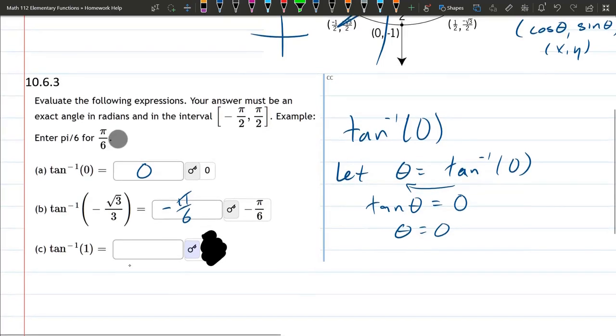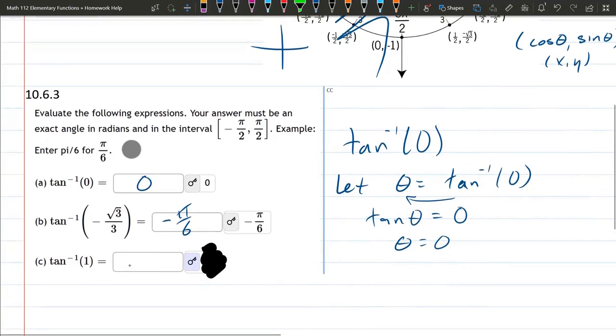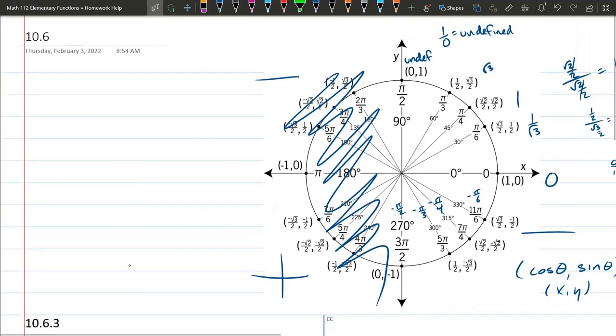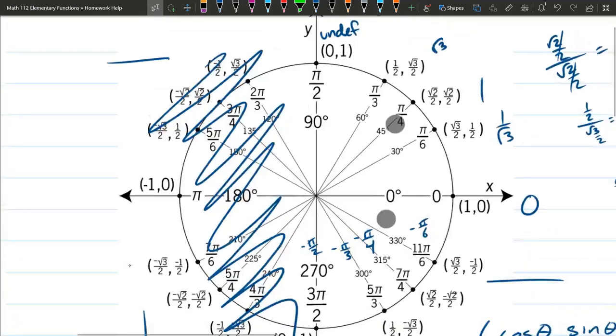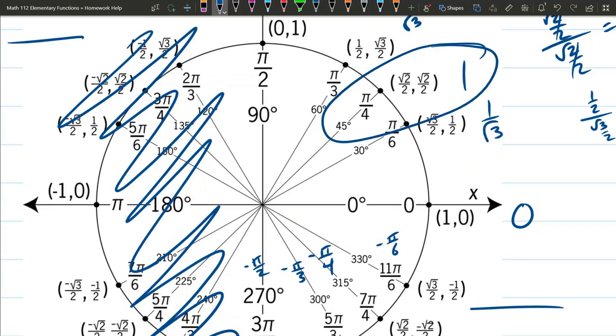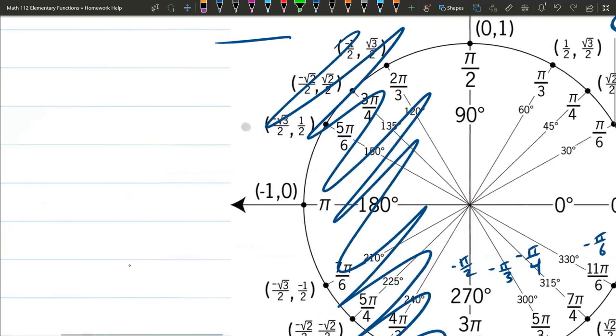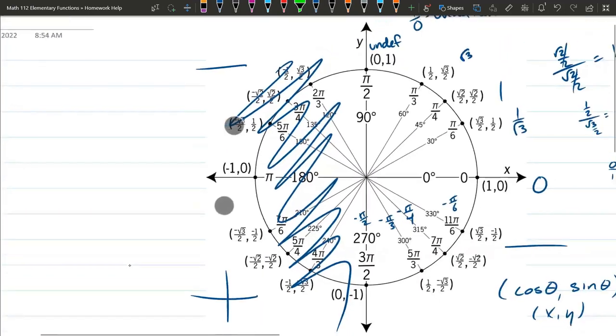Last one, tangent inverse of 1. Well, it's positive 1. So that means we must be in quadrant 1. And you can see right here, here's the 1. And it happens at π/4. So that's all there is for that one.